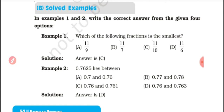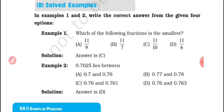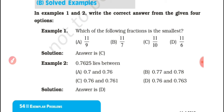Example 2: Between which numbers does 0.7625 lie — between 0.7 and 0.76, or 0.77 and 0.75? The answer is that 0.7625 lies between 0.76 and 0.77.